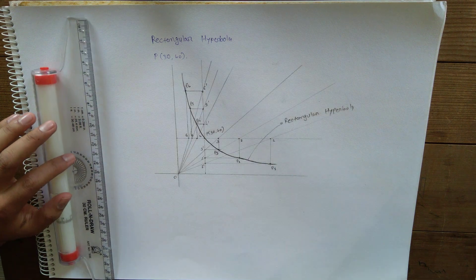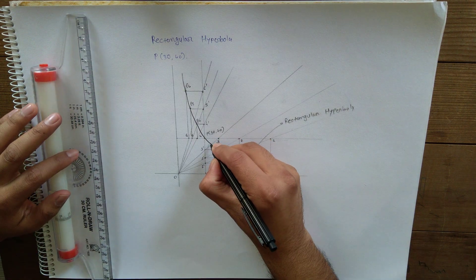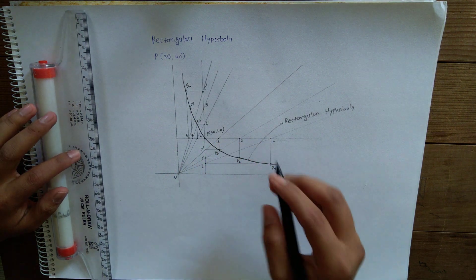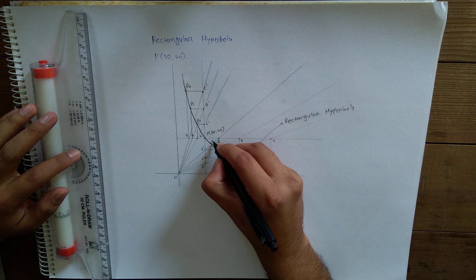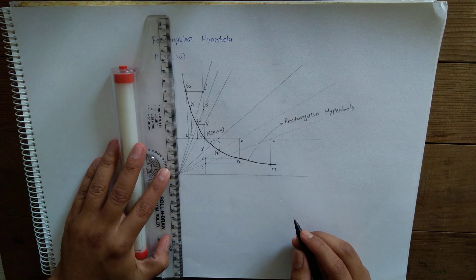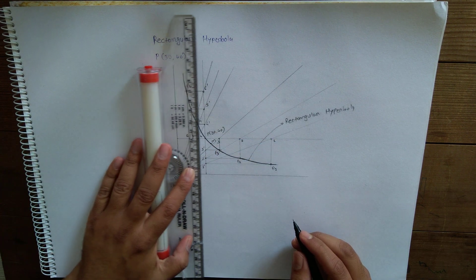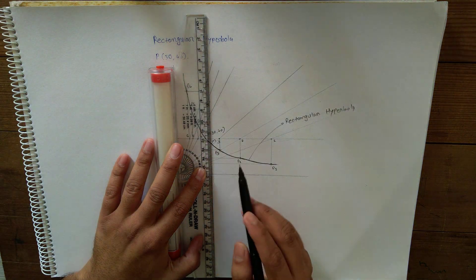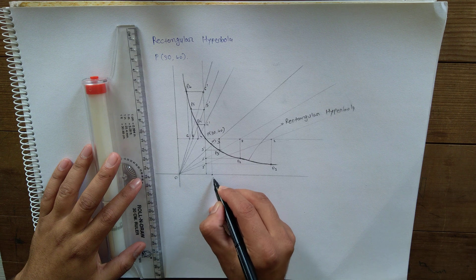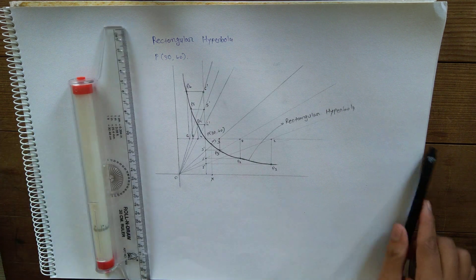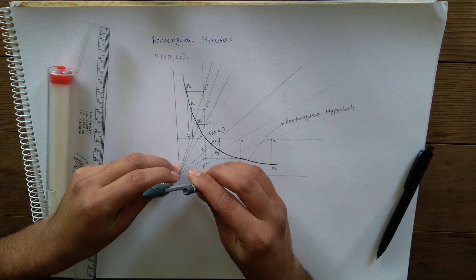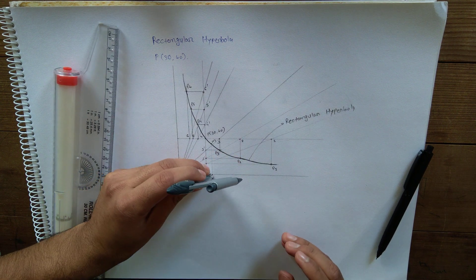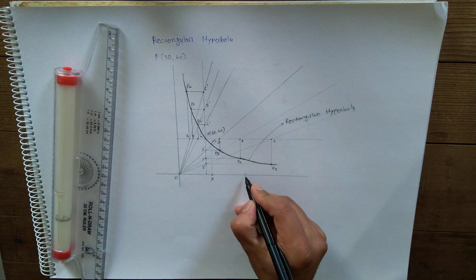To draw tangent and normal to rectangular hyperbola at any point, first mark point M on this curve. From this point, draw one line up to X axis, call this point as X, mark this distance OX on the other side of X, call this point as T.